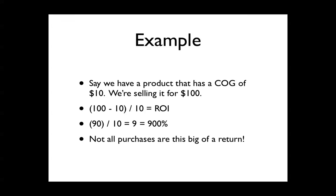Here's an example. We have a product with a cost of goods of $10, and we're selling it for $100. So you take 100 minus 10, which is 90. 90 divided by 10 equals 9. 9 times 100 equals 900%. That is a huge return. Most purchases are not that big. It's just nice round numbers, easy to show.